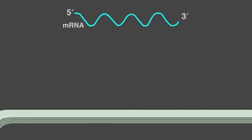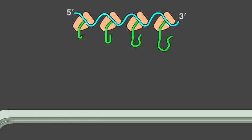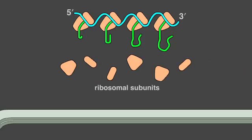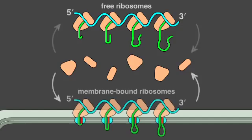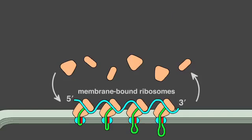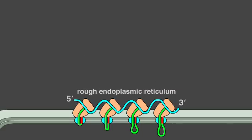As an mRNA molecule is translated into a protein, many ribosomes bind to it, forming a polyribosome. There are two separate populations of polyribosomes in the cytosol that share the same pool of ribosomal subunits. Free ribosomes are unattached to any membrane, while membrane-bound ribosomes become riveted to the ER membrane and translate proteins that are translocated into the ER, coating its surface to create regions called rough endoplasmic reticulum.